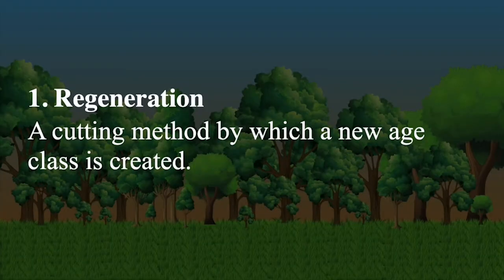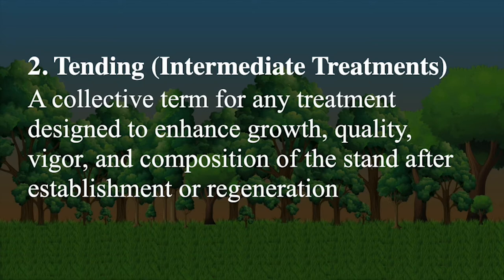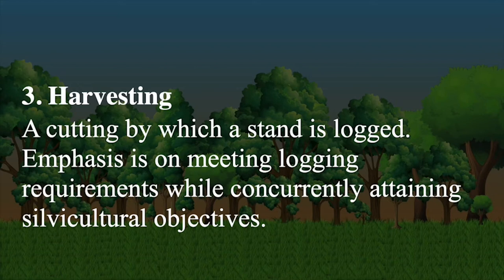Every silvicultural system has three main components: regeneration, tending, and harvest. These three parts work together to create and develop a stand where we're controlling the species composition and structure of the forest through different tending treatments, and then we have some sort of harvest. Those harvests are named after the type of regeneration that might take place. The way that we harvest trees out of the forest, the overstory trees, will dictate the future structure of the forest.